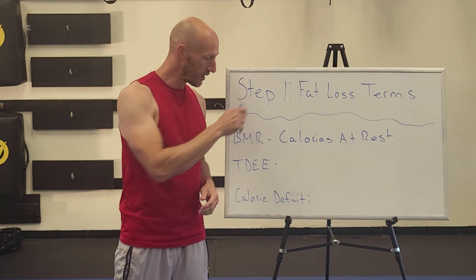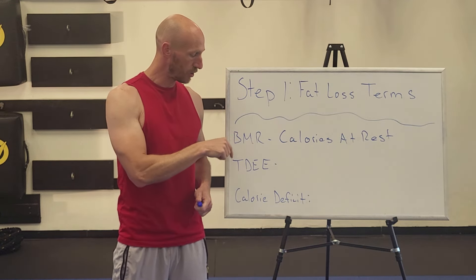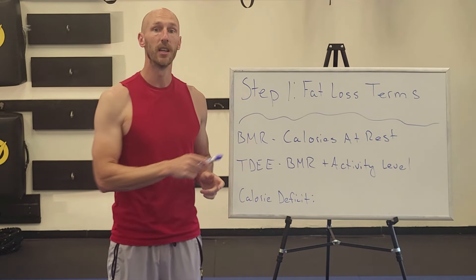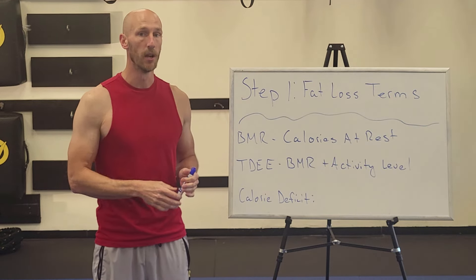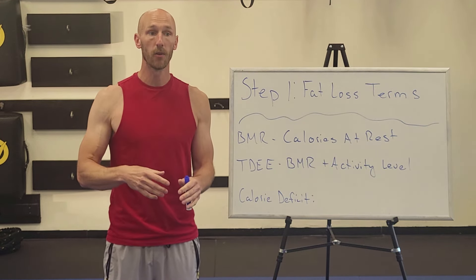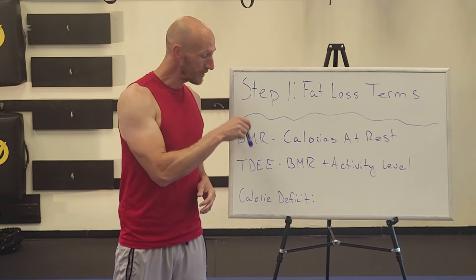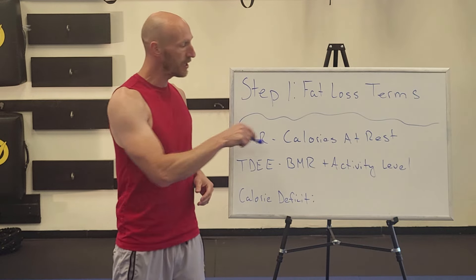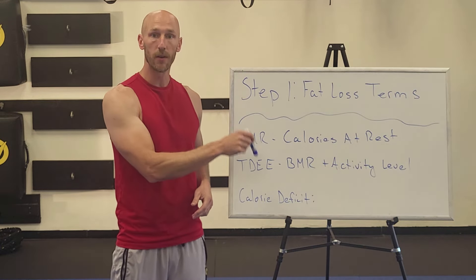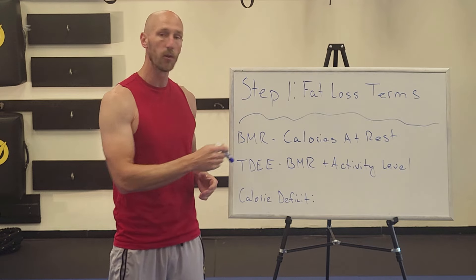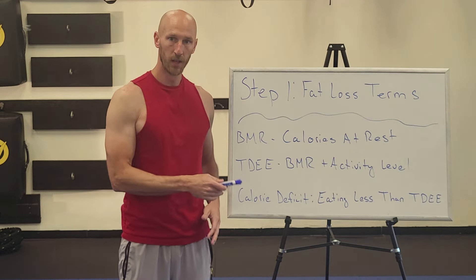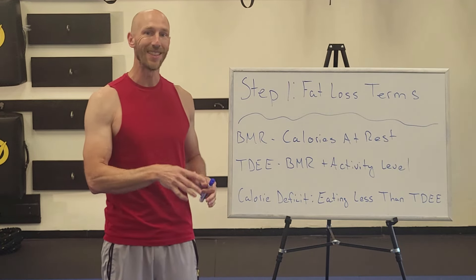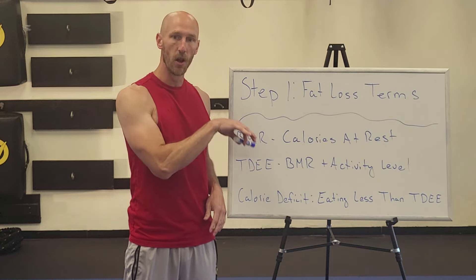We need to learn BMR so that we can add it into our TDEE, which is BMR plus our activity level — total daily energy expenditure. This is the amount of calories you burn throughout the entire day. This is super important and the step that most people miss, because we need to know this number in order to calculate our personal calorie deficit. A calorie deficit is eating or consuming less calories than our total daily energy expenditure.